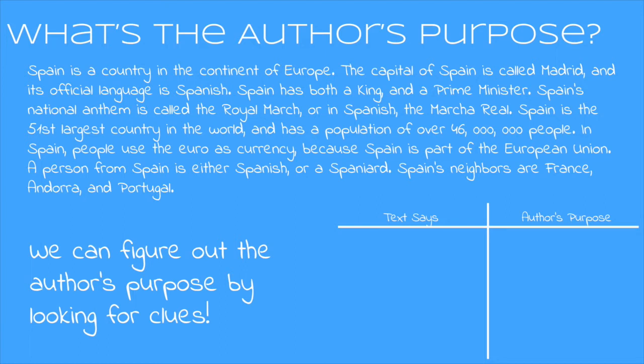Let's take a look. The first clues I find are that Spain is a country in the continent of Europe, and Spain's neighbors are France, Andorra, and Portugal. Both of these clues go together because they're both talking about where Spain is — Spain's location. So we can add that to our graphic organizer. They're giving us facts about the location of Spain.